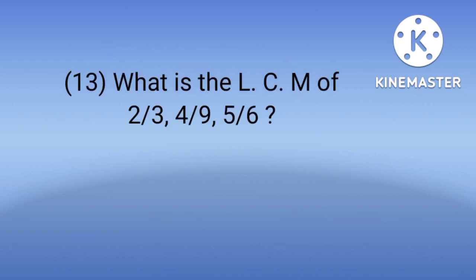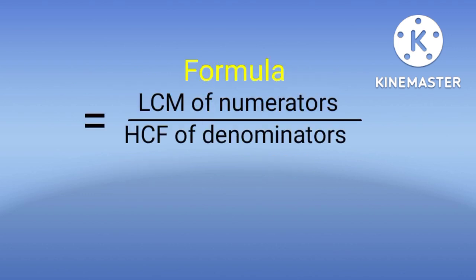Number 13: What is the LCM of 2 by 3, 4 by 9 and 5 by 6? These are the options. The formula for finding LCM is: LCM of numerators divided by HCF of denominators.